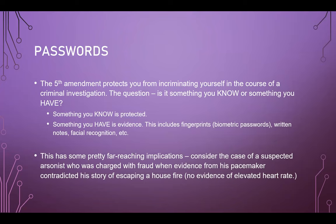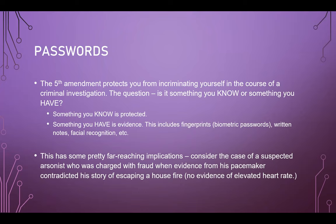The Fifth Amendment does protect you from incriminating yourself in a criminal investigation, meaning you can refuse to provide your password under certain conditions. Something you know is protected by the Fifth Amendment; something you have is not. So if you use a biometric lock — fingerprint, palm vein scan, iris reader, facial recognition — the police can take your fingerprint and use it to unlock your phone. These are things you have. Just like if you wrote your password on a note, they can seize the note and use it. But something only you know — a password that only exists in your head — is protected.